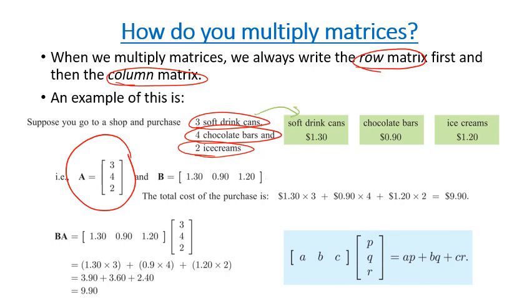And we know that the purchase price of these items is here. So the soft drinks are $1.30, the chocolate bars are $0.90 each, and the ice creams are $1.20 each. And we can create another matrix based on the prices, as we've got in matrix B - $1.30 for soft drinks, $0.90 for chocolate bars, and $1.20 for ice creams.